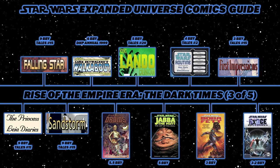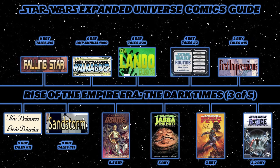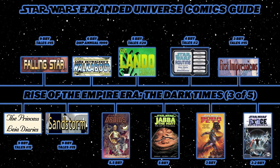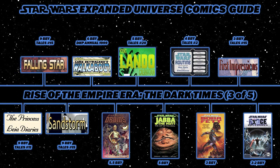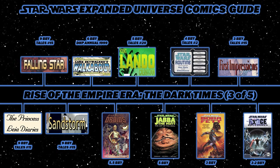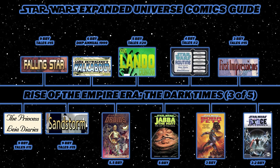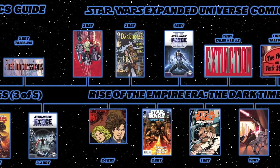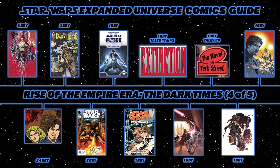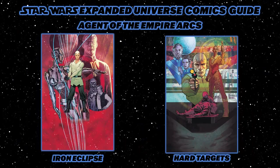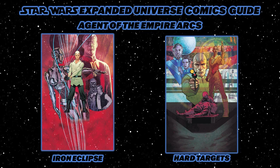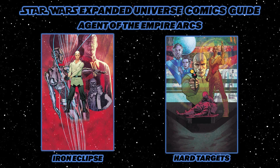Next, Routine from Star Wars Tales number 2, then Boba Fett: Enemy of the Empire. Then Star Wars Tales number 15's First Impressions. Then the graphic novel adaptation of the Force Unleashed video game. Then the beginning of the Star Wars: Agent of the Empire series — made up of two arcs: Iron Eclipse and Hard Targets.